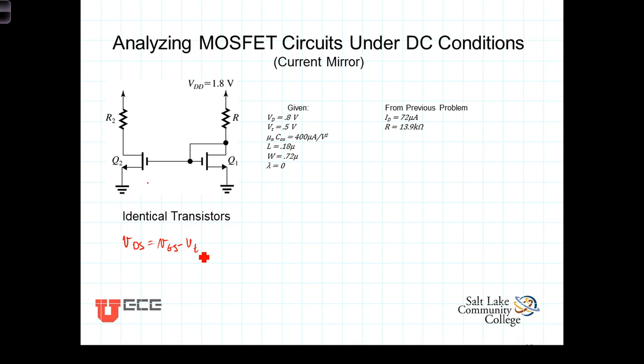Now we're told that these two transistors are identical so that the physical parameters of both of them will be the same. This is the same transistor that we did in the previous example where we determined that the current I sub D was 72 microamps. We also determined the value of R to be 13.9 kiloohms.